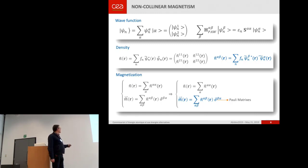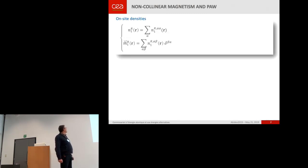Just to mention that in Abinit, the potential, the Hamiltonian and so on, use this formalism. And the density is handled with this formalism, N and M.